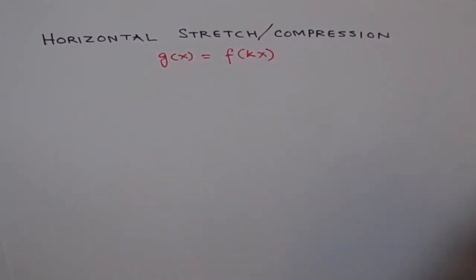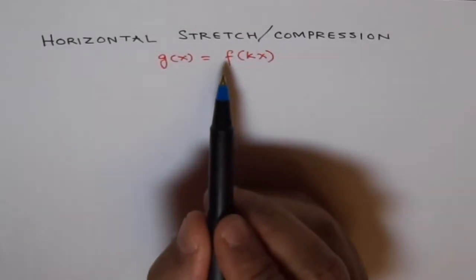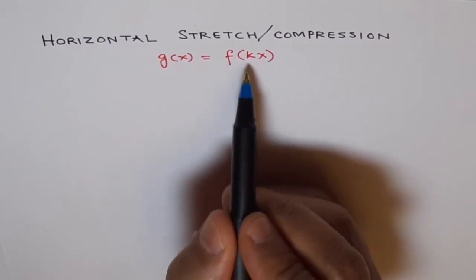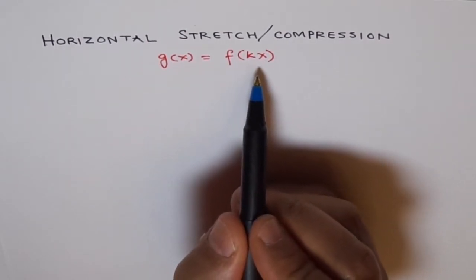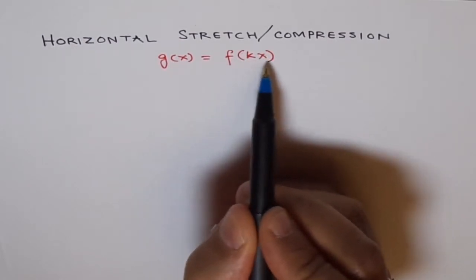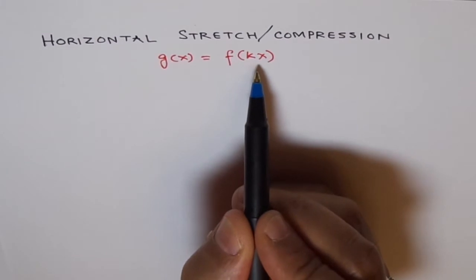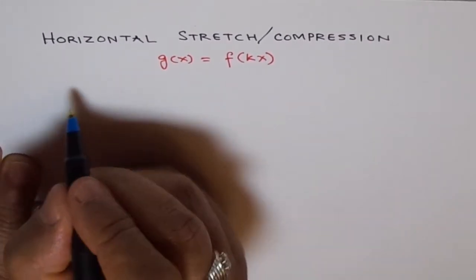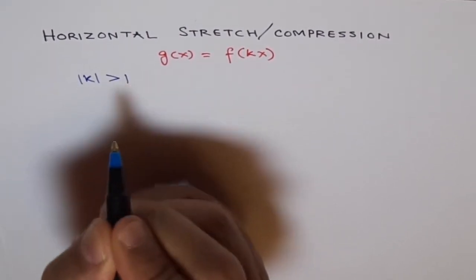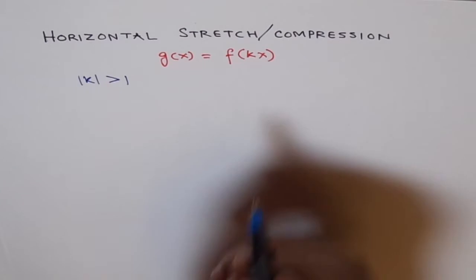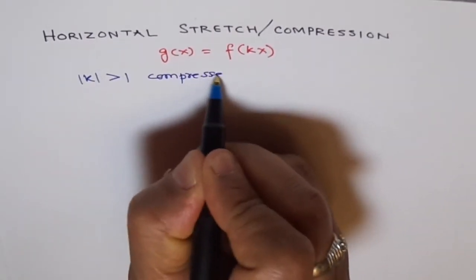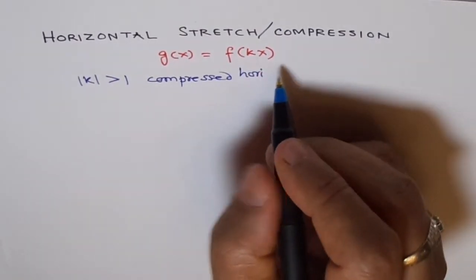Let's have a function f(x) and consider that g(x) is a transformed function of f, written as f(kx). If k is inside the function, it represents a horizontal transformation. If the absolute value of k is greater than 1, the graph is compressed horizontally by a factor of 1 over k.